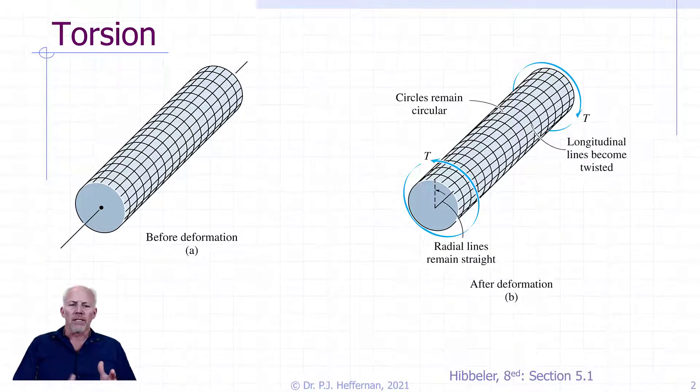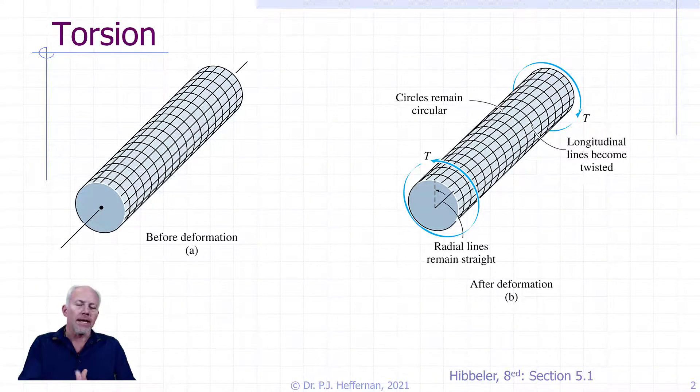Note that the cross section at the end of the shaft remains flat. That is, it doesn't warp or bolt. If you were to cut a plane along those circular lines that we drew, they would still cut in exactly the same spot before and after the twisting.